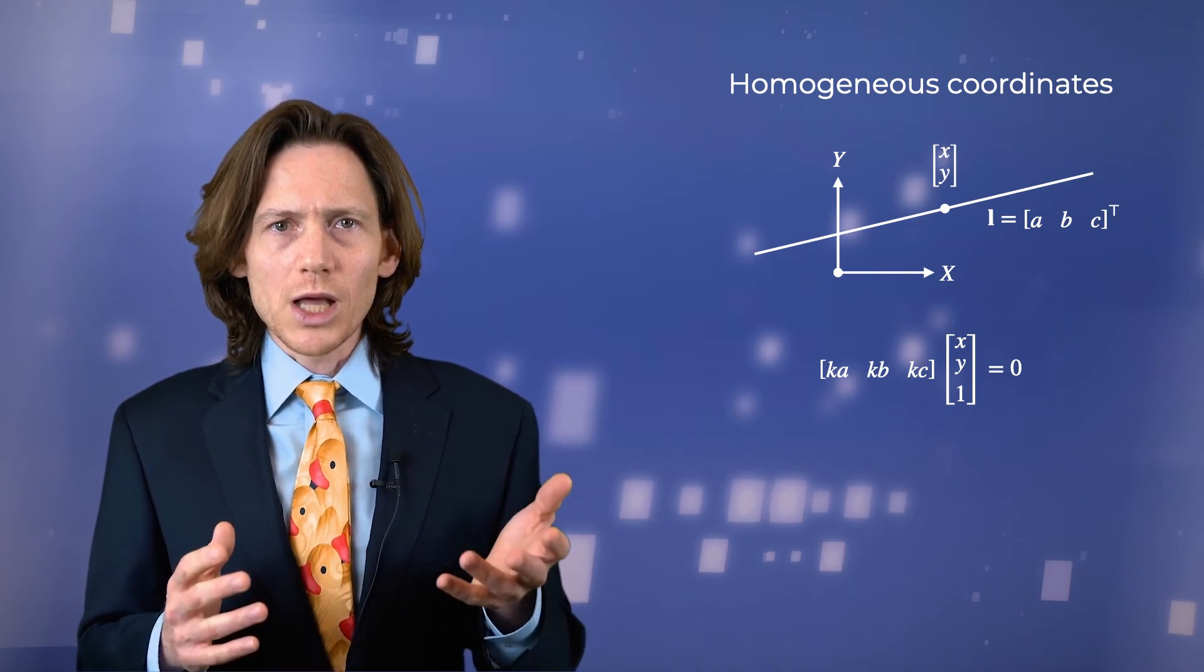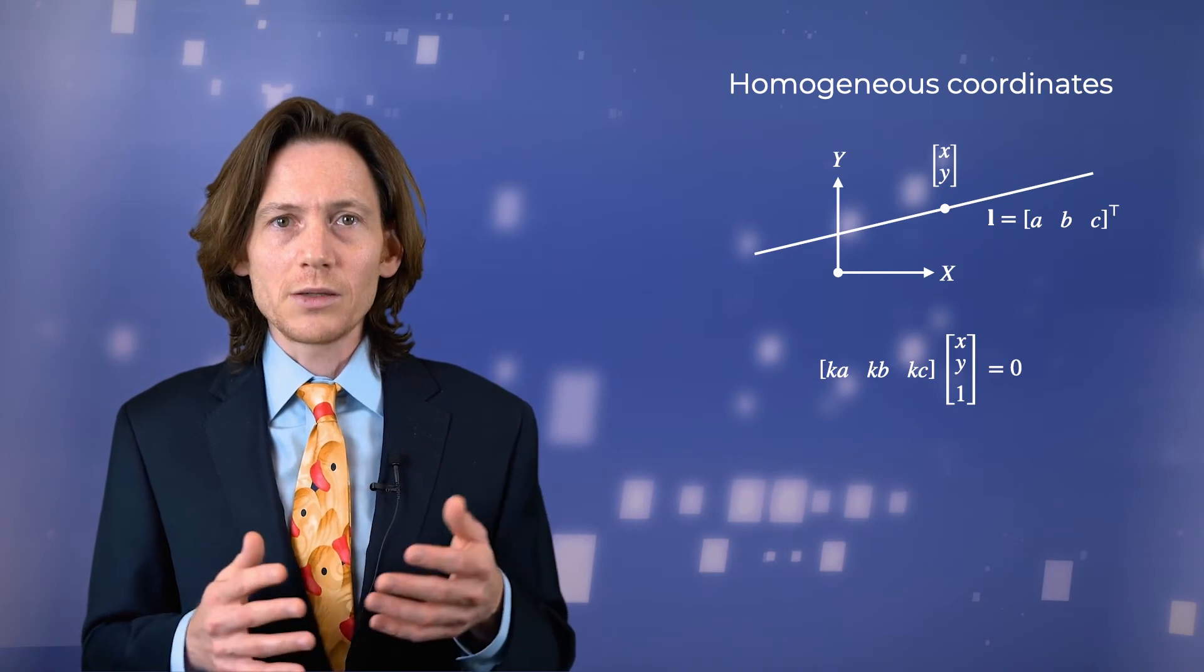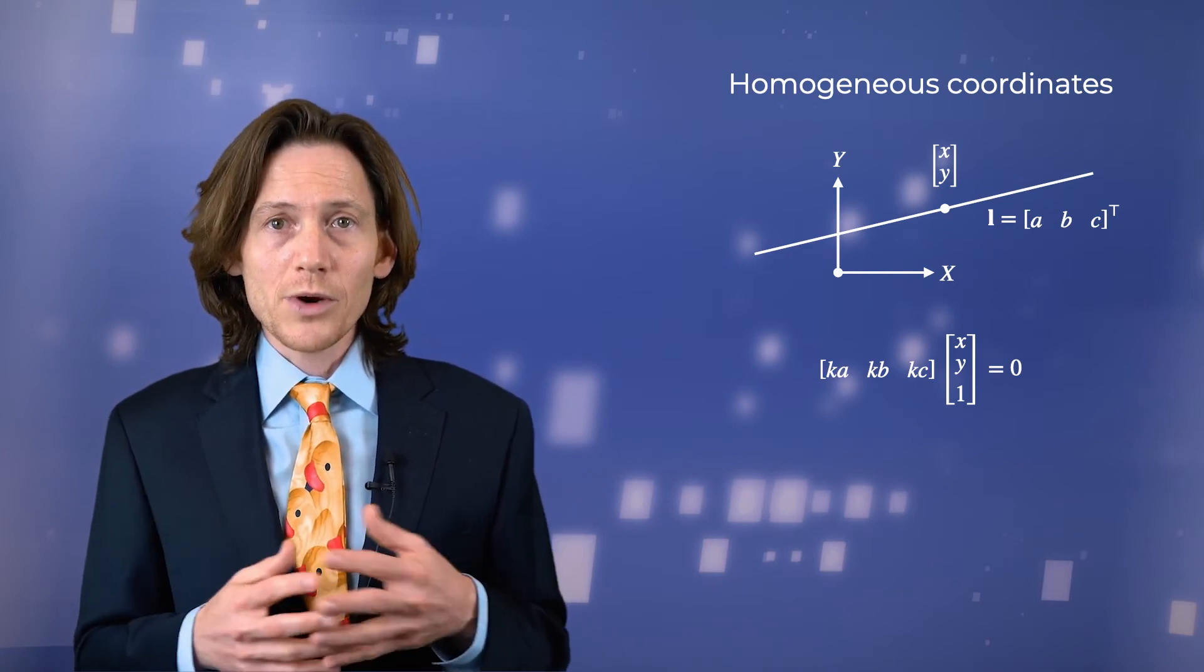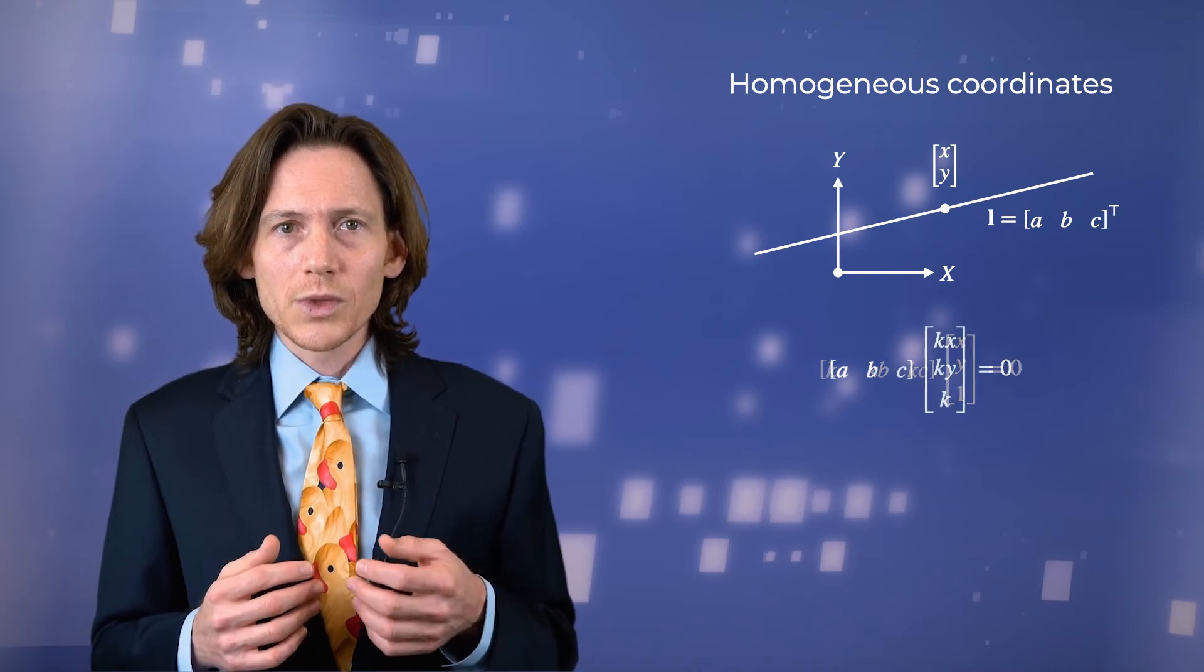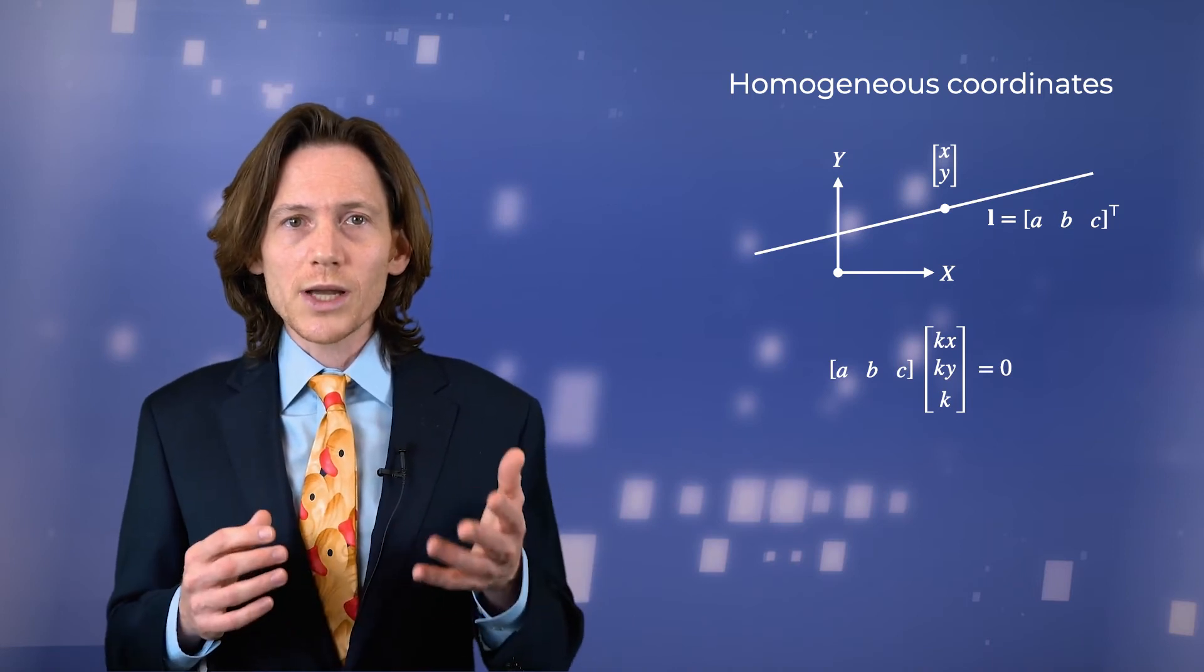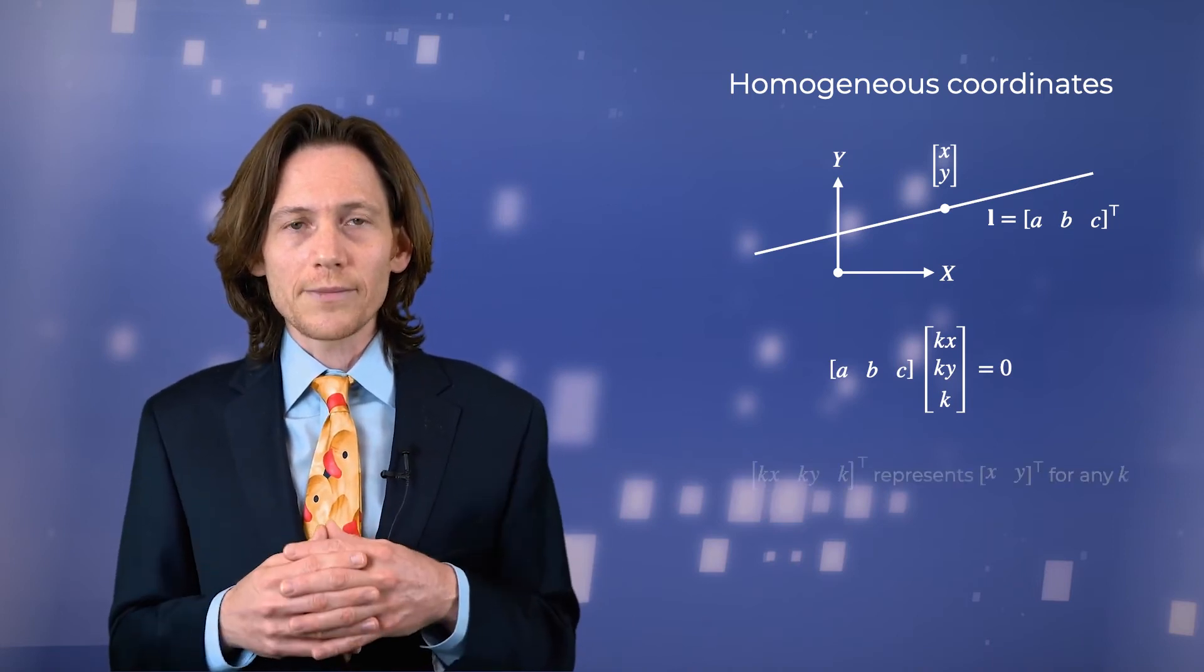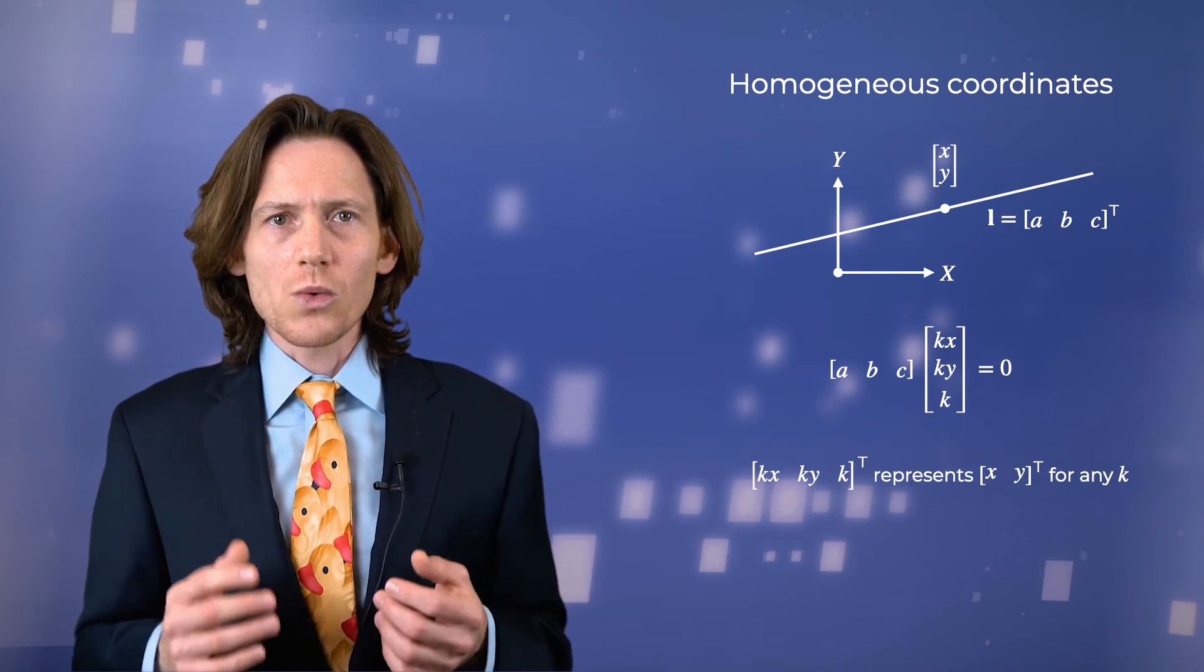Any point that lies on the line defined by the vector l also lies on the line defined by the vector k times l, because they're the same line. The parameters are invariant to multiplication by any non-zero value.